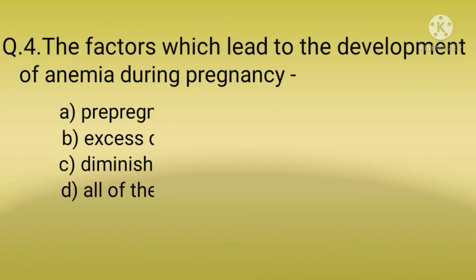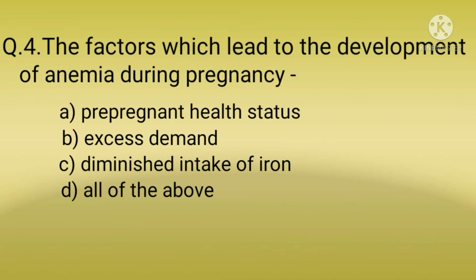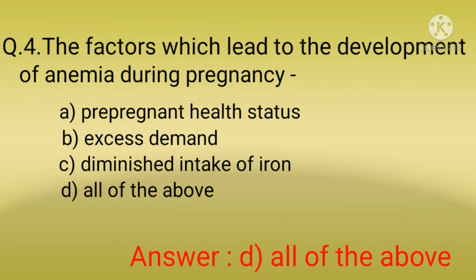Question number four: The factors which lead to the development of anemia during pregnancy are: option A, pre-pregnant health status; option B, excess demand; option C, diminished intake of iron; option D, all of the above. The correct option is option D, all of the above. In pre-pregnant health status, the majority of women start pregnancy with a pre-existing state of reduced iron reserve.